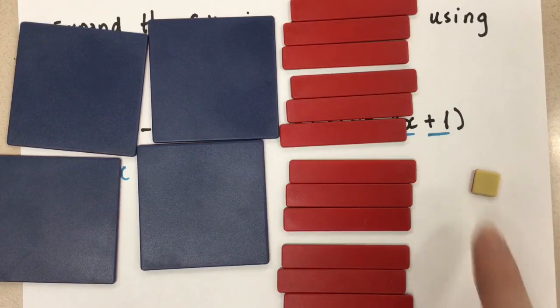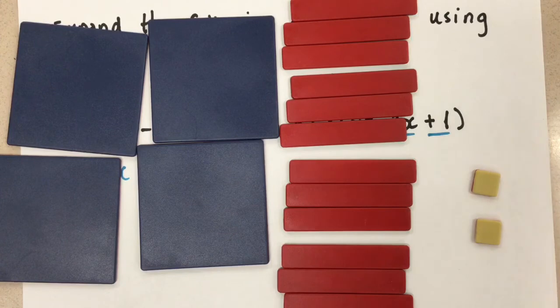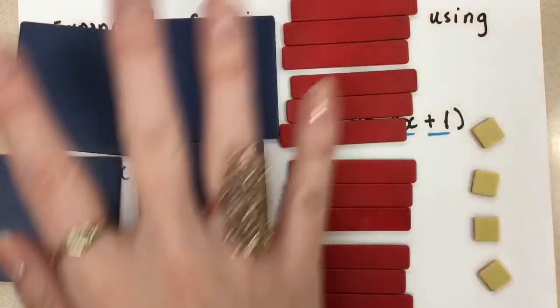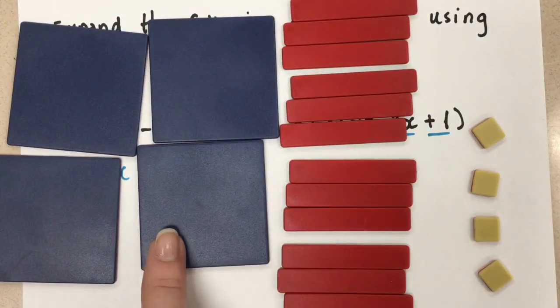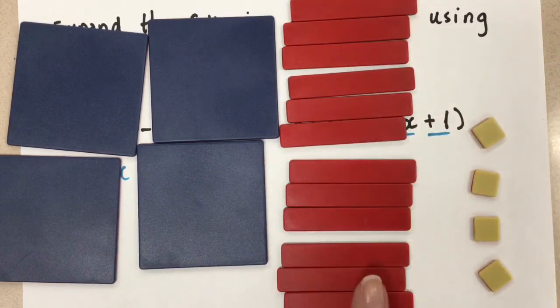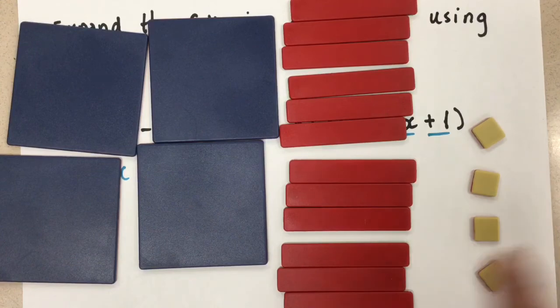And then we need to multiply that little one by 4. So instead of 1, we will have 4 of them. So look at our final solution now. If we put all this together, we have 4x squared. And 1, 2, 3, 4, 5, 6, 7, 8, 9, 10, 11, negative 12x and 4 ones.